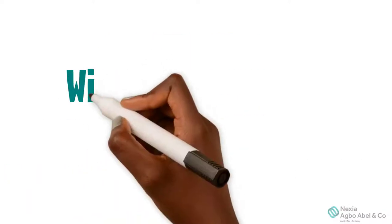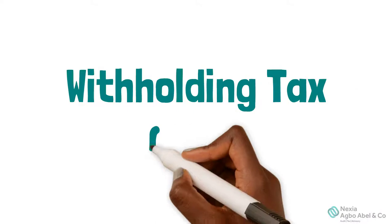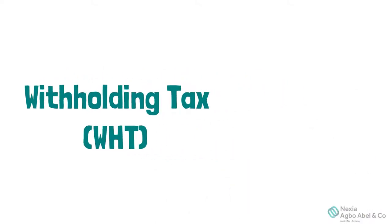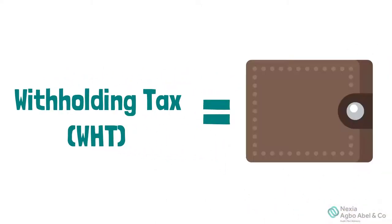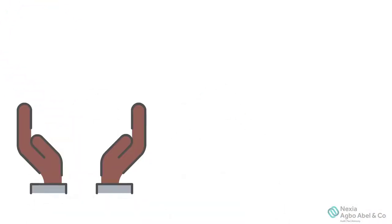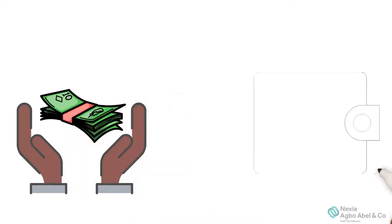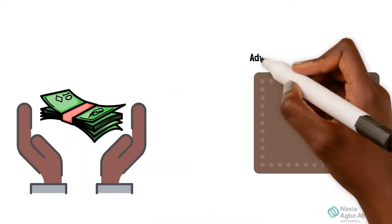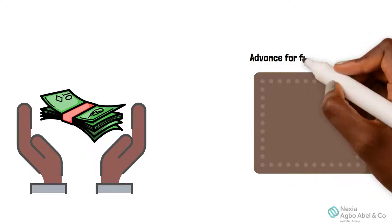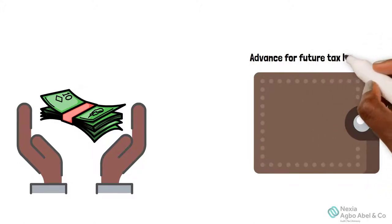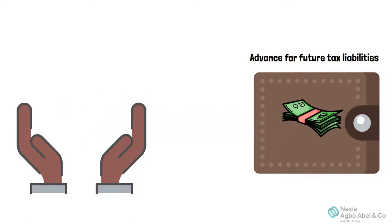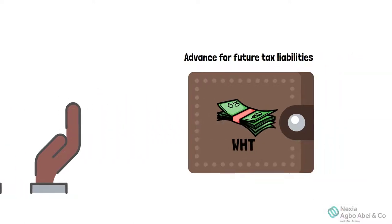Withholding Tax Simplified. Withholding Tax is an advanced payment of income tax which may be used to offset or reduce income tax liability, or claimed as a refund. It is an advanced payment to be applied as tax credit to settle the income tax liability of a taxpayer for the relevant year of assessment. This means that withholding tax is not a tax itself, but an advanced payment used to offset future tax liabilities.